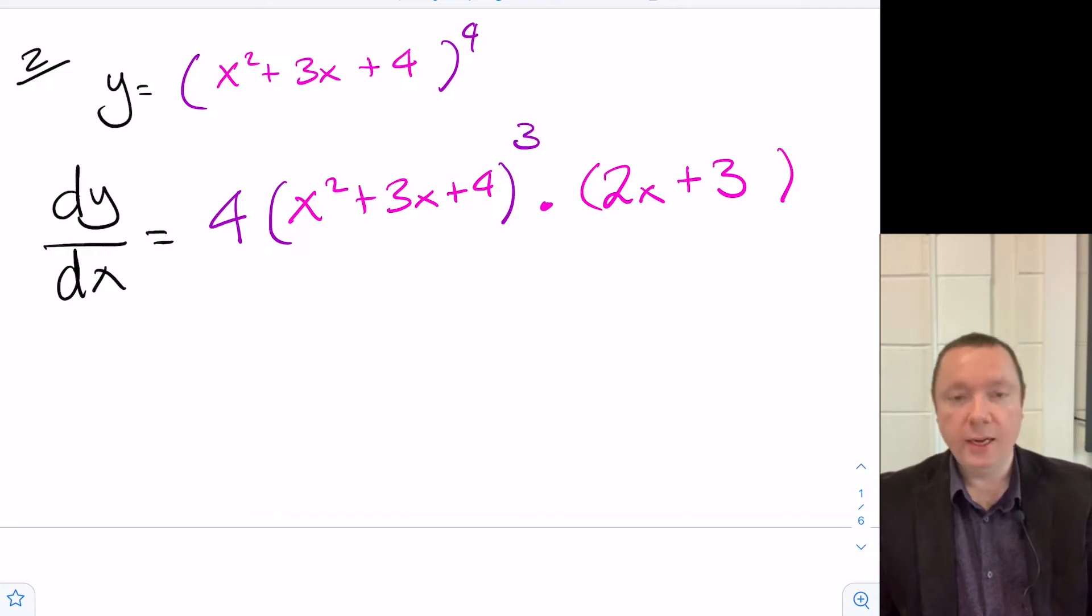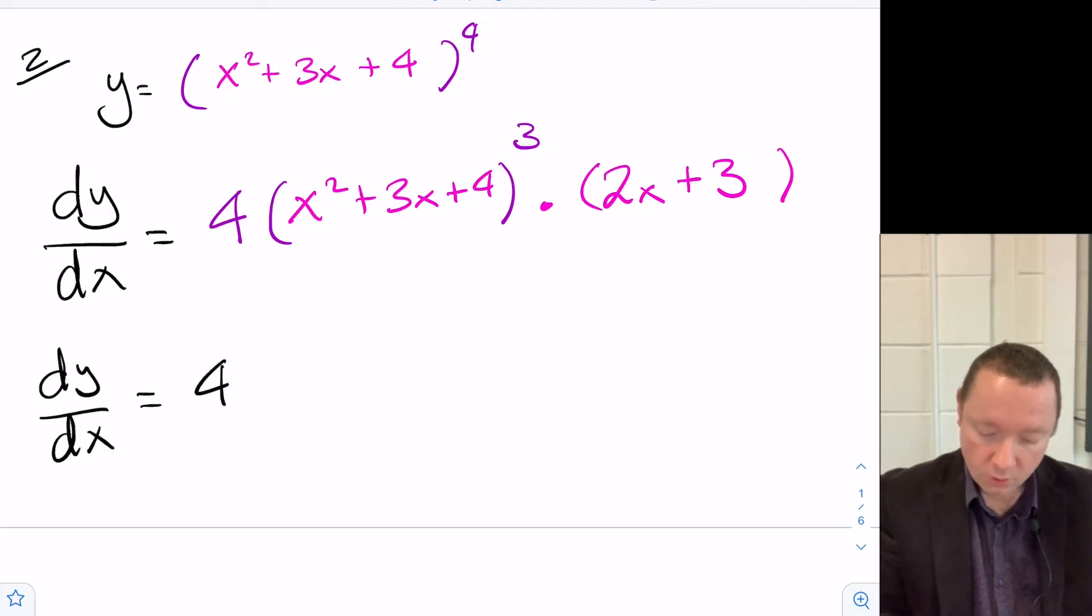So we've got times 2x plus 3. We can now just tidy that up a little bit. So dy/dx is simply 4 times my (2x plus 3) times my (x squared plus 3x plus 4) cubed.